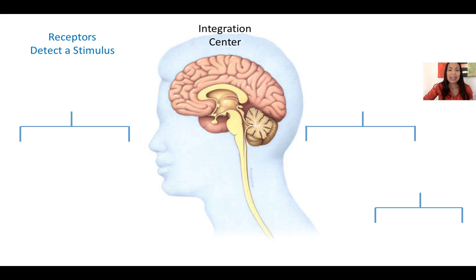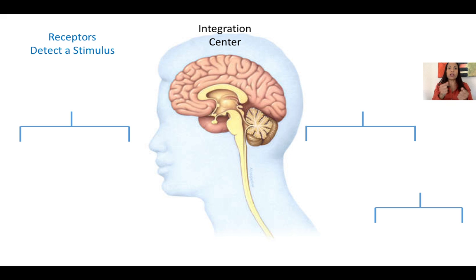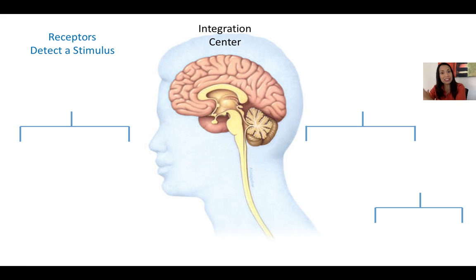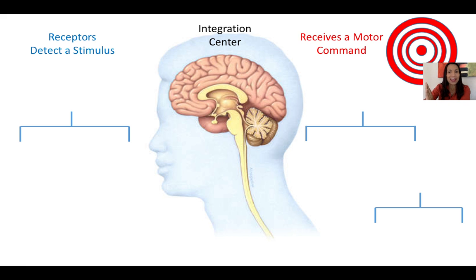These receptors are going to send — through special wires or nerves — that information to an integration center, which is the central nervous system. That is where all of these stimuli coming from different sources are going to be integrated and a response is going to be elaborated. That response is going to be sent out of the central nervous system to a target organ. The target organ is the one that receives the motor command — the order for contraction.